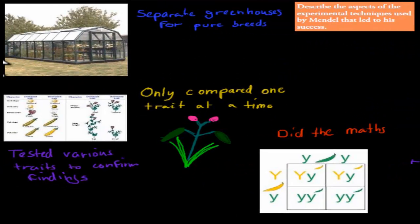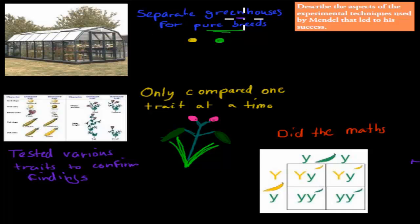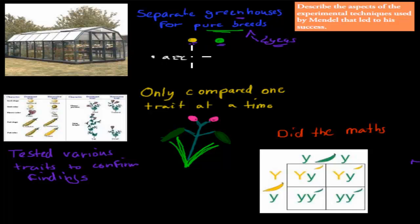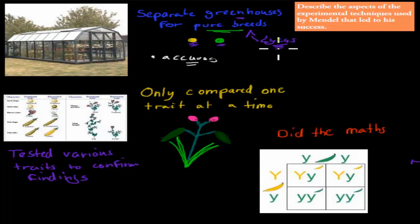Mendel made sure all three factors were present in his experiment. He separated his purebreds into different greenhouses — one for the yellow peas and one for the green ones — and bred them separately for two years. This increased accuracy because he could be reassured that his plants were pure, so his actual idea could be accurately tested without any contamination between the two varieties.